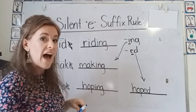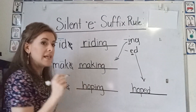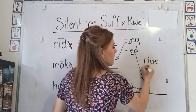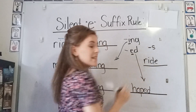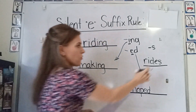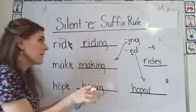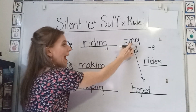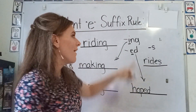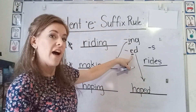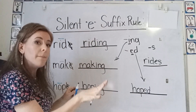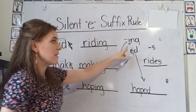Begins with a vowel. Now, if your suffix does not begin with a vowel — for example, we can add the suffix -s, which is not a vowel — we just add the s. We do not drop the e. You drop the e when you are adding a suffix that begins with a vowel. 'I' is a vowel, 'e' is a vowel.